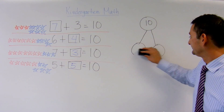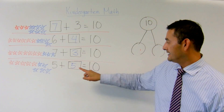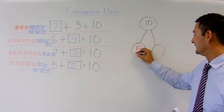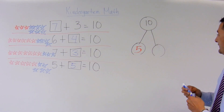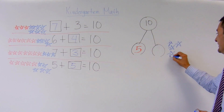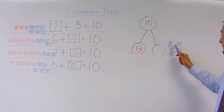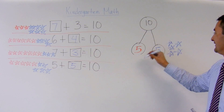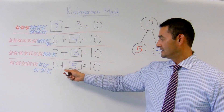And then the last one: 5 plus something equals 10. I've got my 5 here. I need to make 10. So, 5, 6, 7, 8, 9, 10. How many do I have here? 1, 2, 3, 4, and 5. So 5 plus 5 is 10.